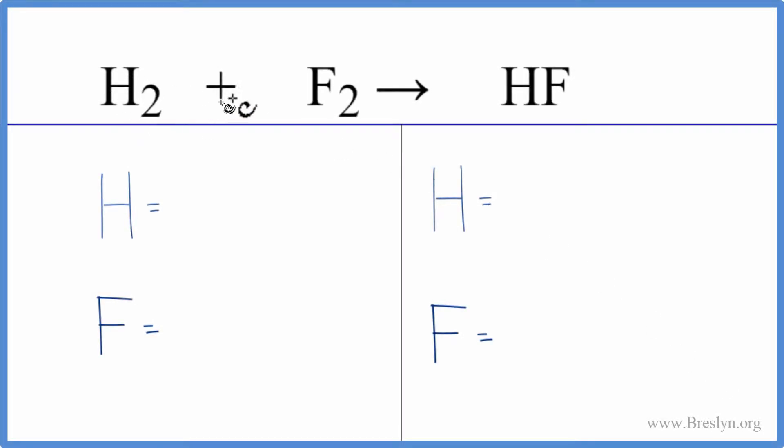In this equation we have H2 plus F2 and that gives us HF. That's hydrogen plus fluorine gas that gives us HF, hydrofluoric acid.